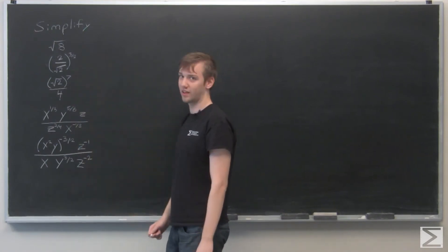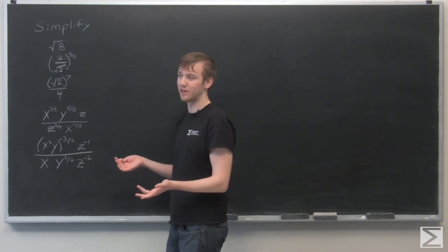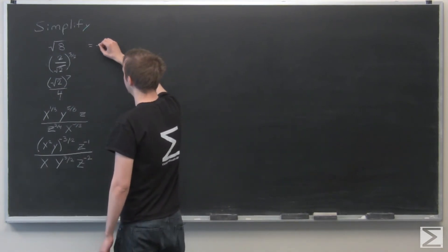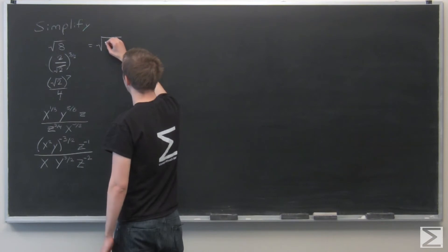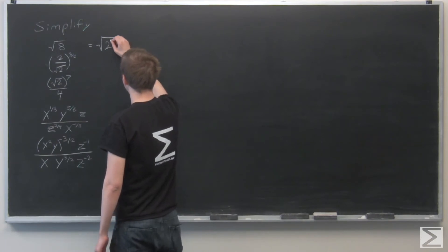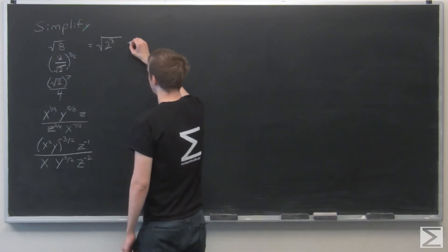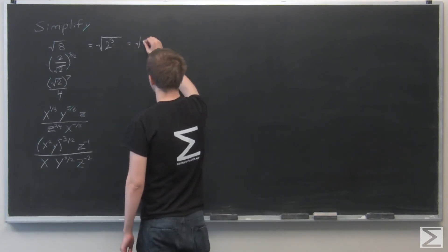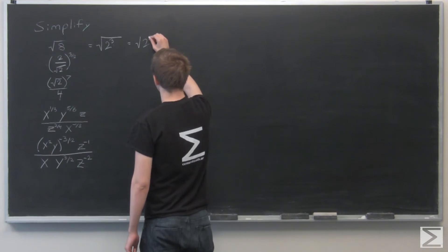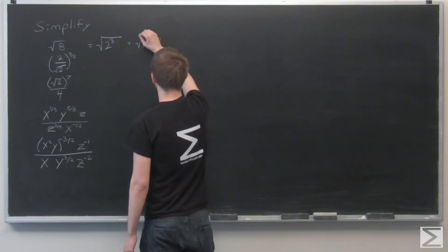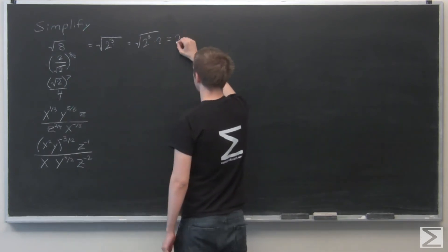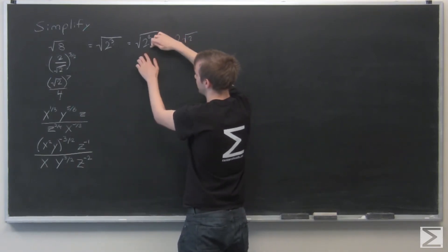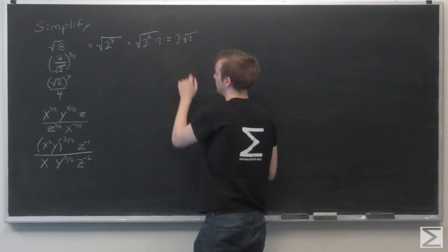First, simplify the square root of 8. Using our rule: the square root of 8 equals the square root of 2 cubed. Taking out the even power, that's the square root of 2 squared times 2. The square root of 2 squared is just 2, and the remaining 2 stays inside, so the answer is 2 root 2.